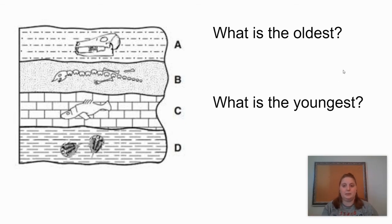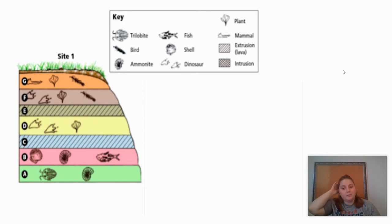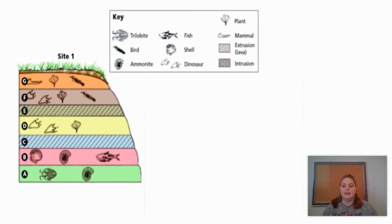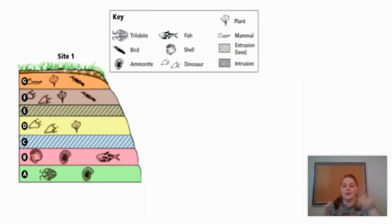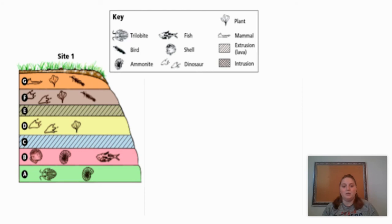So let's look at a much harder problem — this is the problem from today's packet. We have site one with a lot of different layers here: layers A, which is on the bottom, all the way through G, which is on the top. Without any other information, without knowing age or years, I can tell you right now: A is the oldest rock layer and G is the youngest. Anything in layer G is going to be much more recently evolved organisms, and anything in layer A is going to be really old.